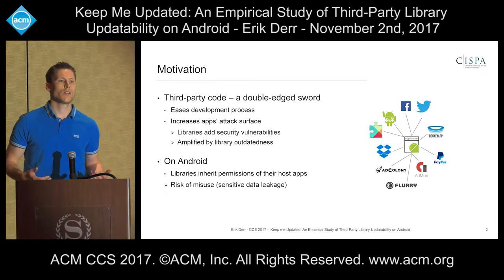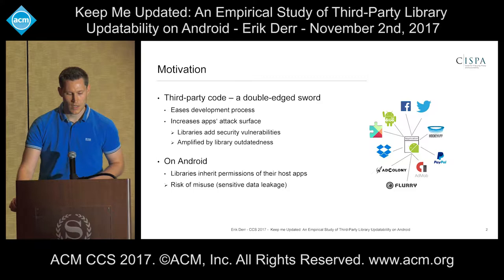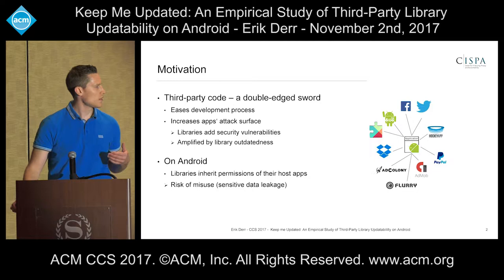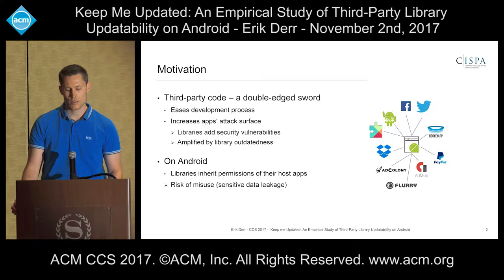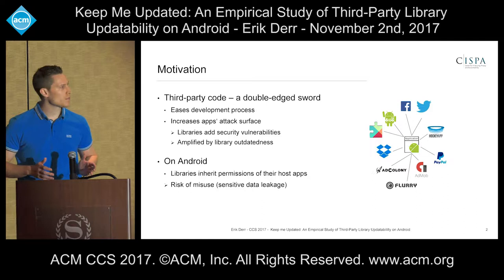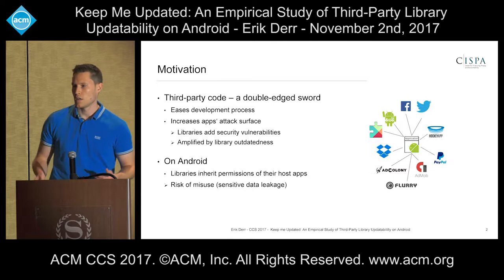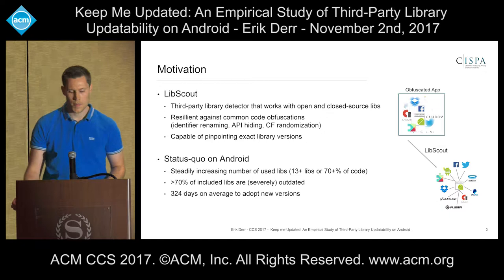How do we approach these problems? Essentially, we need to be capable of detecting third party libraries in the application binary. At CCS last year, we presented a novel approach called LibScout, that basically works with open and closed source libraries, and its unique selling point was that it is resilient against commonly used code obfuscation techniques. It is not only capable of determining the actual library that is used, but also pinpointing an exact library version, which is necessary to determine whether a vulnerable library is used.